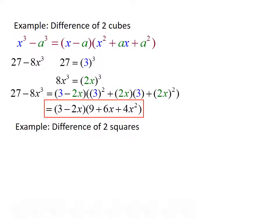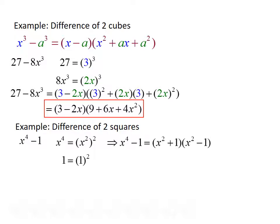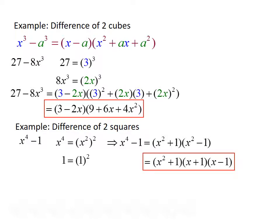Let's do one more example of the difference of two squares. We have x to the 4th minus 1. x to the 4th can be rewritten as x squared quantity squared, and 1 can be rewritten as 1 squared. So x to the 4th minus 1 factors as x squared plus 1 times x squared minus 1. But x squared minus 1 is also the difference of two squares, so the final factorization is x squared plus 1 times x plus 1 times x minus 1.